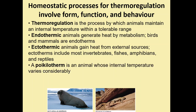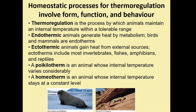We can also introduce the terms poikilotherm and homeotherm. A poikilotherm is an animal whose internal temperature varies considerably, while a homeotherm is an animal whose internal temperature stays at a constant level. Traditionally people thought cold-blooded animals are poikilotherms and warm-blooded animals are homeotherms, but there are examples where this is not the case, so we're much better off using the terms endotherm and ectotherm.